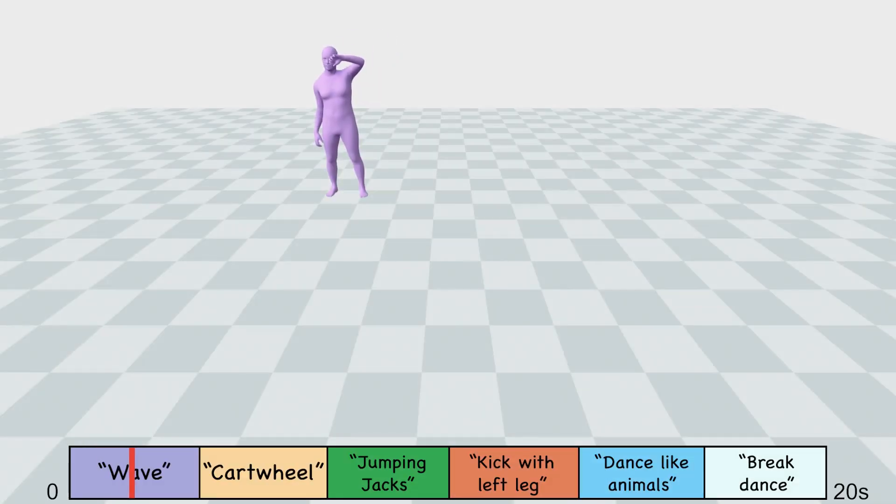Genmo can also handle an arbitrary number of text prompts. Notice how all transitions are smooth and seamless, maintaining consistency across the entire motion sequence.